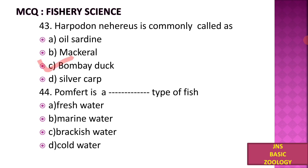Next, Pomfret is what type of fish? A) Freshwater, B) Marine water, C) Brackish water, D) Cold water. Pomfret, also called Poplite, is a marine water fish.